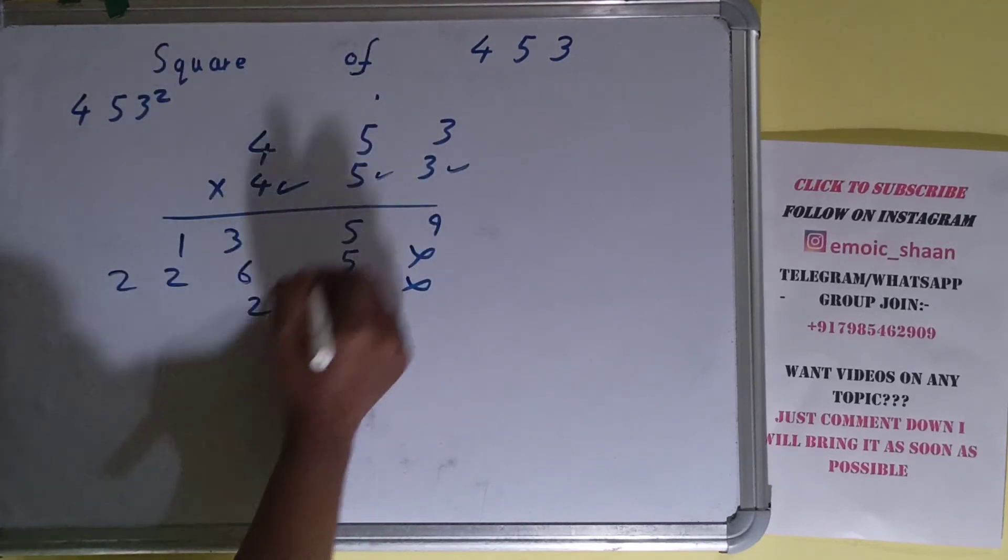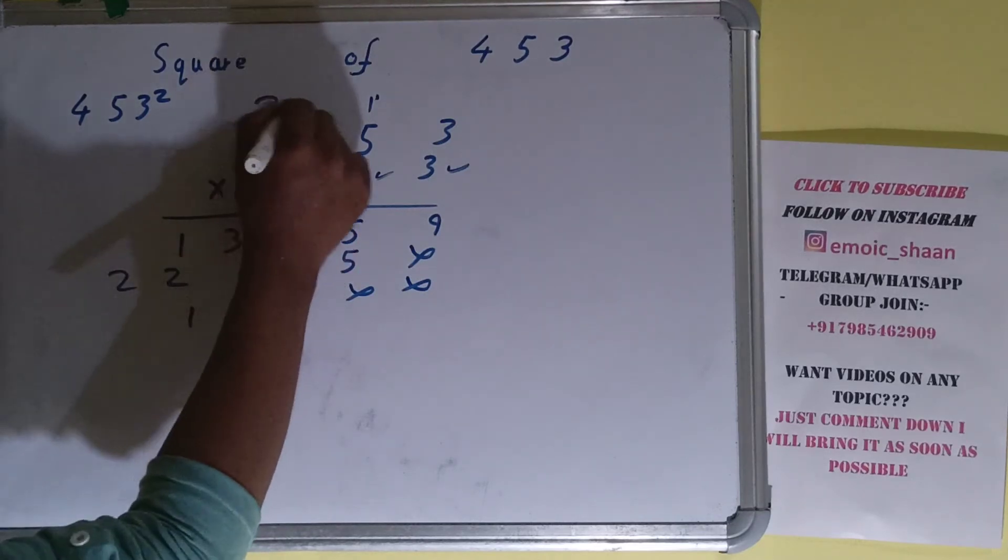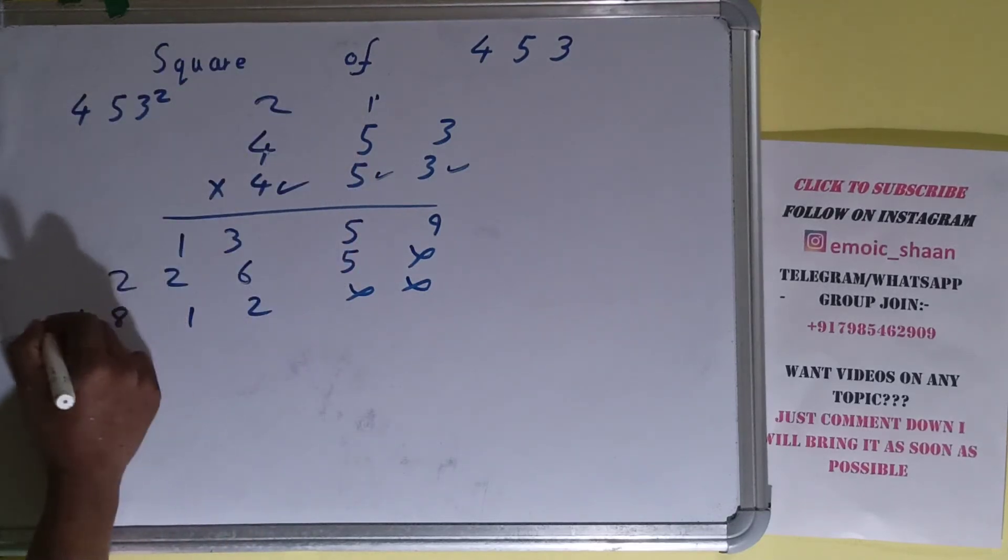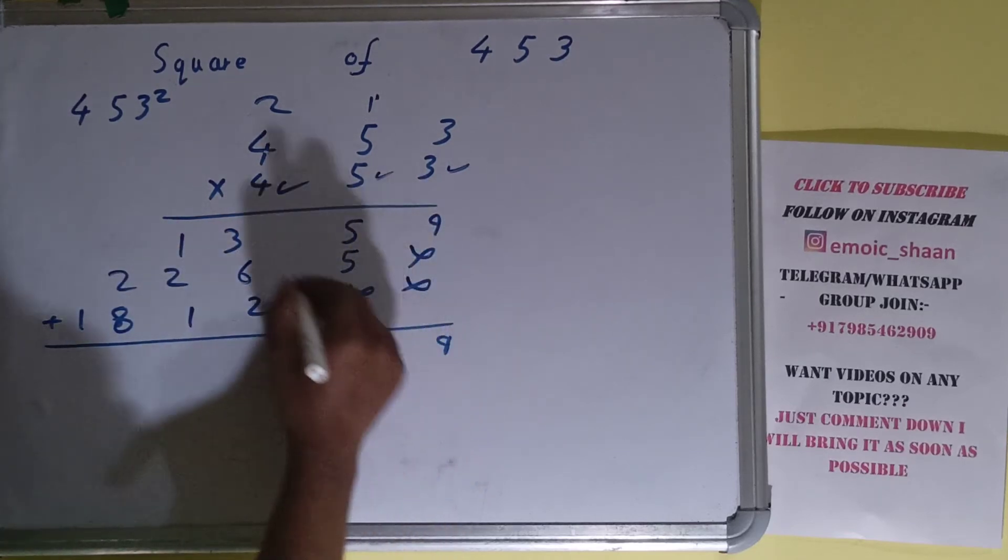Now this four. Four times three is twelve, one carry. Four times five is twenty, plus one is twenty-one, two carry. Four times four is sixteen, plus two is eighteen. Add everything. Nine, zero, one here.